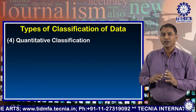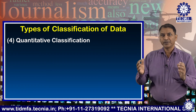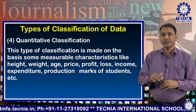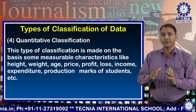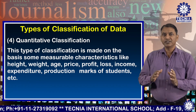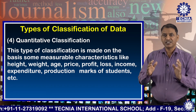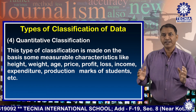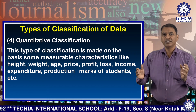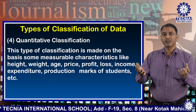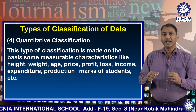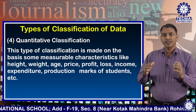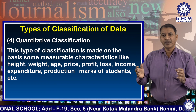Number four: quantitative classification. This type of classification is made on the basis of some measurable characteristics like height, weight, age, price, profit, loss, income, expenditure, production, marks of students, etc.